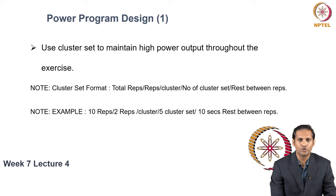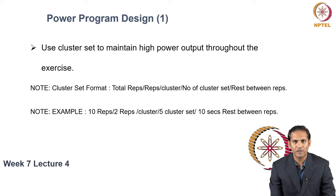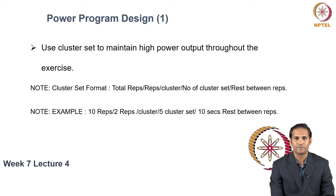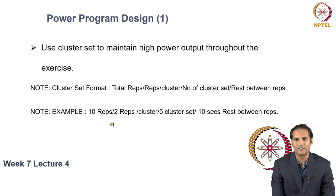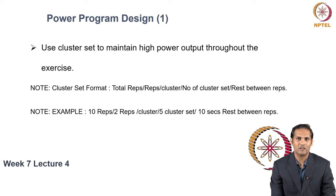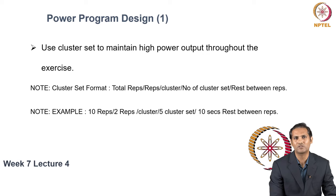As an example: you plan to do 10 repetitions of a light ballistic exercise, but you do not have the capacity to maintain high power output for all 10 repetitions. Using a cluster set, you choose 2 reps per cluster. After every 2 reps you wait for 10 seconds. Because you plan to do 10 total repetitions with 2 repetitions per cluster, you would implement a total of 5 cluster sets to complete 10 repetitions. That is how you use a cluster set to maintain high power output for every rep throughout the exercise and throughout the workout.